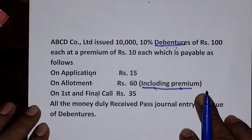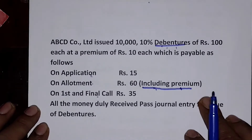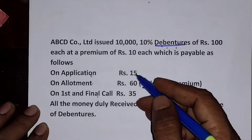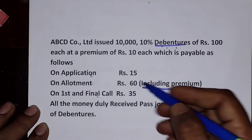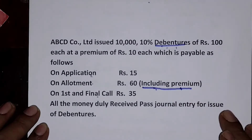In my next video it will be problems on issue of debentures at discount. It is a six marks problem because only application, allotment, and first and final call is given — only three installments. Therefore three twos are six, so six journal entries will come.